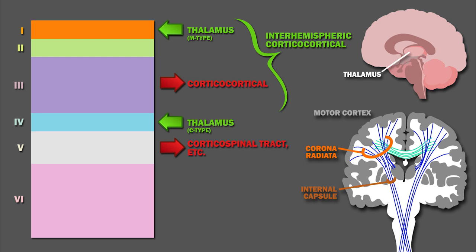They also project to the basal ganglia, the reticular formation, the cerebellum, and other areas. Finally, layer 6 has reciprocal connections with the thalamus.